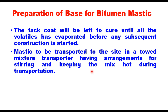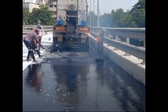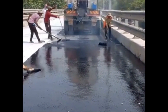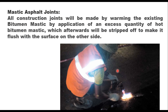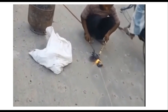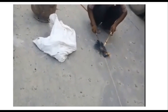Mastic is laid normally in one coat at 175 to 210 degrees centigrade and spread uniformly by hand using wooden floats. Construction joints are made by warming the existing bitumen mastic by application of excess hot bitumen mastic, which is then stripped off to make it flush with the surface. Joints shall be painted with a coat of VG 30 grade bitumen and then treated with blocks of base mastic with coarse aggregate, softened by blow lamps and toweled flush with the surface.